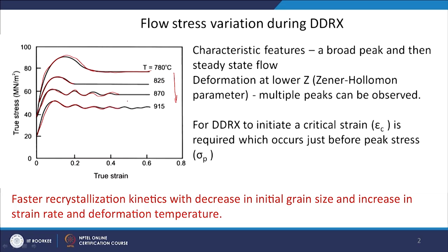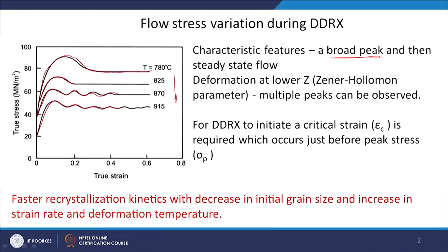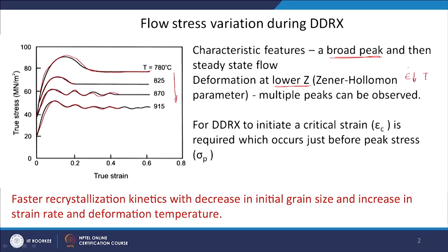A characteristic feature is basically a broad peak and then the steady state flow. At deformation with lower Zener-Holloman parameter we already know this, you will be seeing multiple peaks. Lower Z means either strain rate is low or temperature is high. As temperature is increasing you have started seeing multiple peaks; similar behavior you may see when reducing the strain rate. With lower Z, instead of one single broad peak you will start seeing multiple peaks.